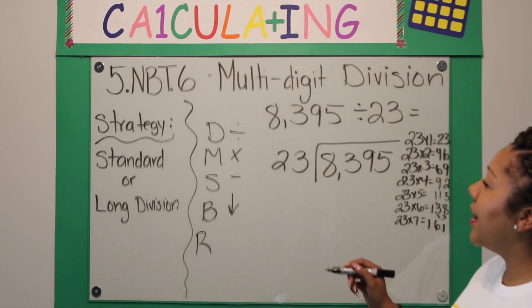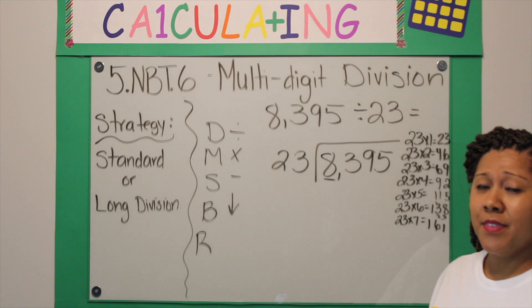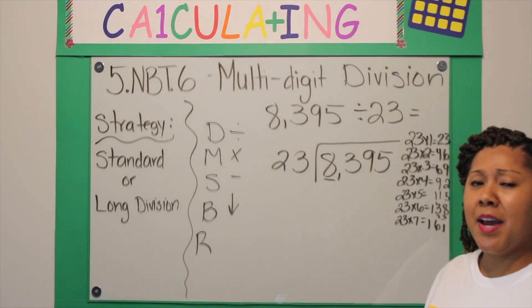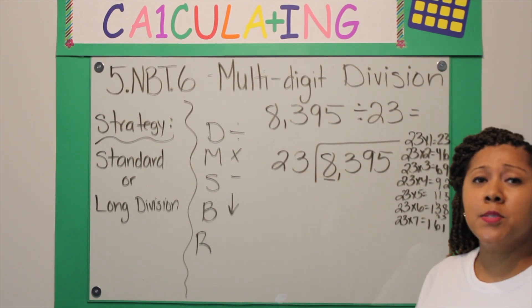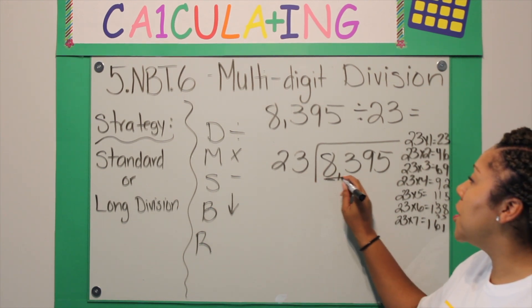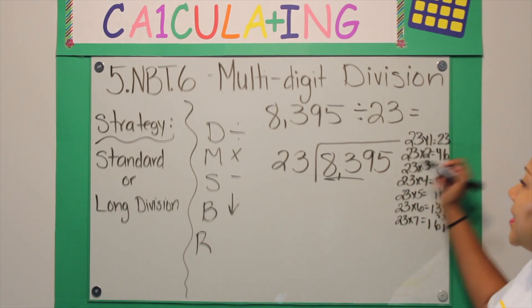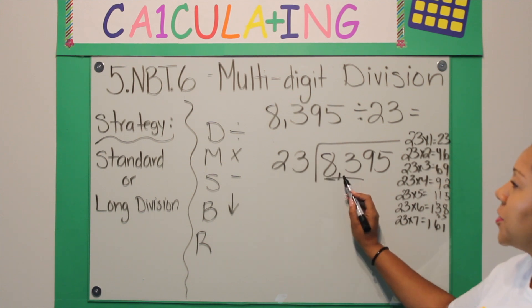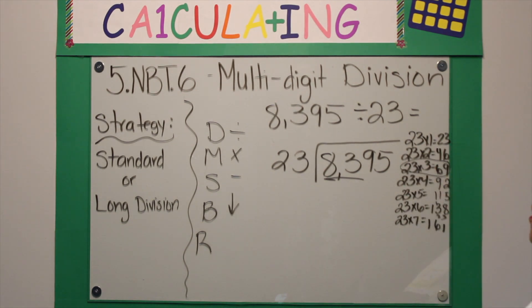So the first thing I want to do is divide. I need to see how many times can 23 go into 8? Well, if I have 8 skittles I cannot put it into 23 groups, so you cannot divide a larger number by a smaller number. So I'm going to scoot over and I actually need to divide 83. So I'm going to look on the side and see how many groups of 23 can I pull out of 83 without going over, and here it looks like I can use my 3 multiplication fact, which is 23 times 3 is 69.